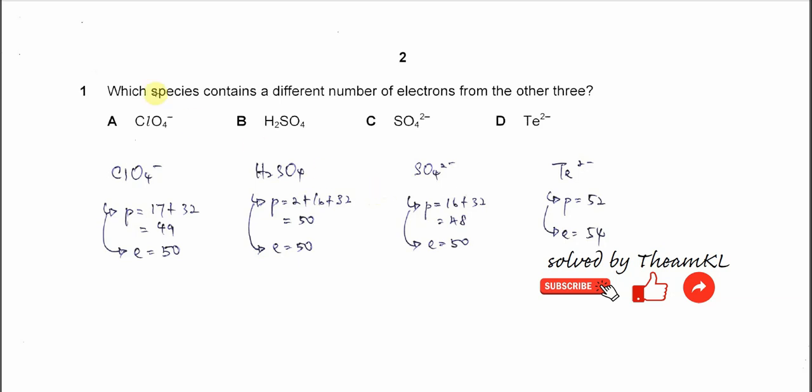Question 1. Which species contains a different number of electrons from the other three? So we need to get the electron number to find the answer.